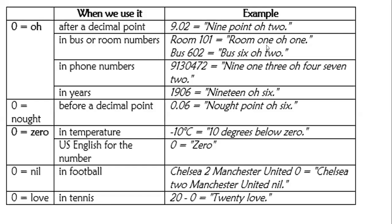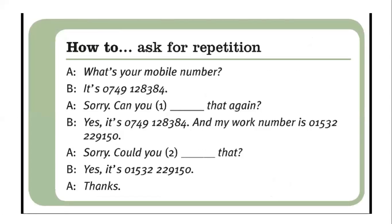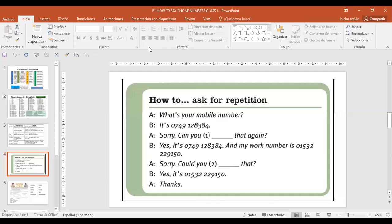How to ask for phone numbers and how to ask for repetitions. En el British English se dice 'mobile' y en el American English también 'mobile'. What's your mobile number? It's oh seven four nine one two eight eight four. Sorry, can you repeat that again? And if repeated: seven four nine, twelve, eighty-three, eighty-four. Could you repeat that? Yes, it's zero one five three two two nine one five oh.